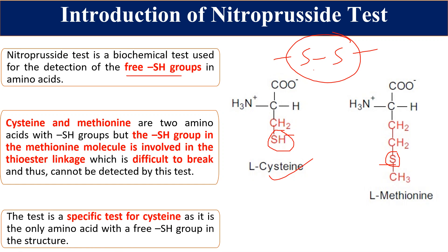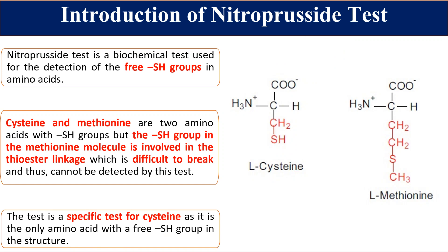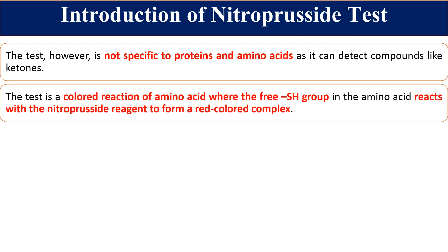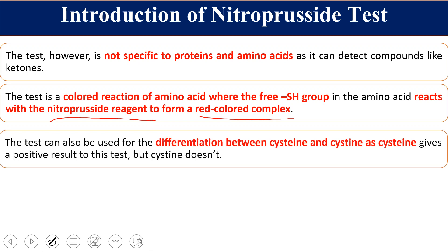This test is very specific only for cysteine, as it is the only amino acid having a free SH group in its structure. The test is not specific for proteins or amino acids in general — it cannot detect compounds like ketones on its own. It is a colorimetric reaction where amino acids containing sulfhydryl groups react with the nitroprusside reagent and give a red-colored complex. This test can be used for differentiation of cysteine from cystine and from methionine.